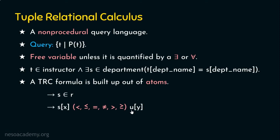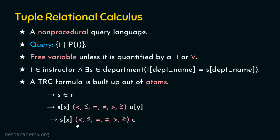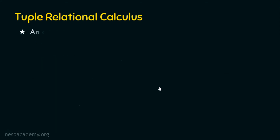There is no requirement that both sides of a tuple relational formula must have a tuple variable. The right-hand side may be a constant. For example, attribute x defined on tuple variable s can be compared against a constant, such as when we want to find all employees drawing a salary of ten thousand dollars — in that case the right-hand side is ten thousand dollars. Atoms are the basic building blocks of formulae in tuple relational calculus.